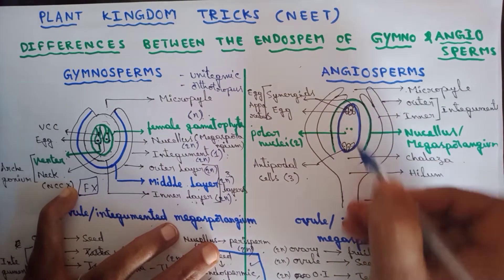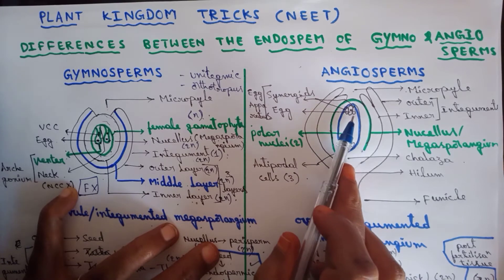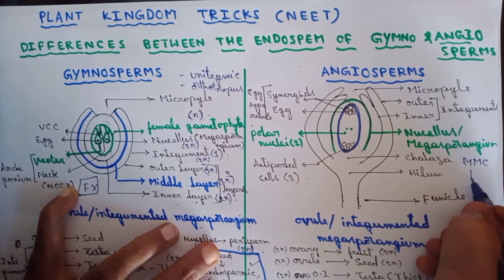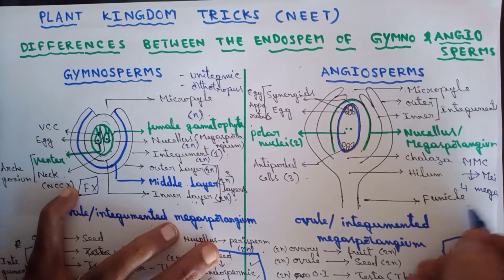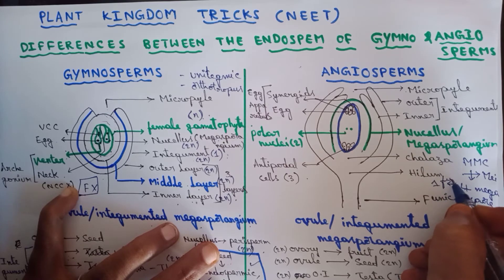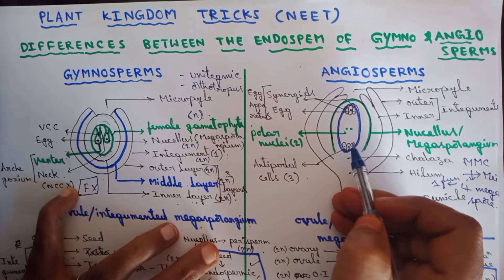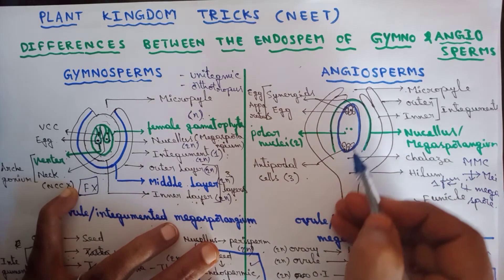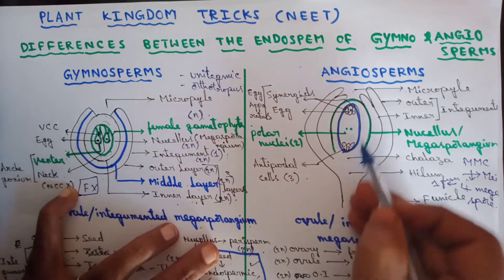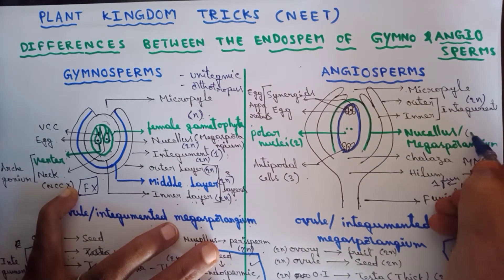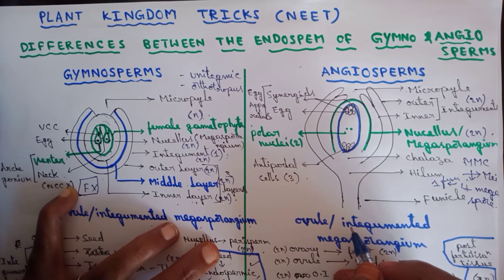Inside the nucellus, one of the nucellar cells gets differentiated into a megaspore mother cell, which undergoes meiosis and forms four megaspores. Among four megaspores, only one is functional and three degenerate. This functional megaspore undergoes mitotic divisions — seven mitotic divisions or three generations of mitosis — resulting in the formation of the embryo sac. The ploidy of the integuments and nucellus (megasporangium) is 2n, as these are parts of the sporophytic plant body.